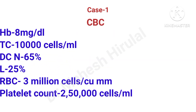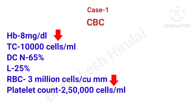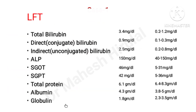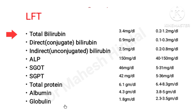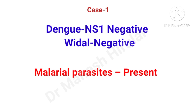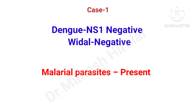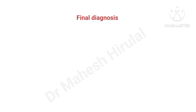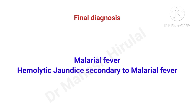In CBC, there is reduced hemoglobin and reduced RBC count. The LFT shows rise in total bilirubin with a greater rise in indirect or unconjugated bilirubin. ALP is normal, SGOT and SGPT are slightly raised, and total protein is within normal limits. Dengue and Widal tests were negative. In peripheral smear, malarial parasites were present. The final diagnosis for this case is malarial fever and hemolytic jaundice secondary to malarial fever.